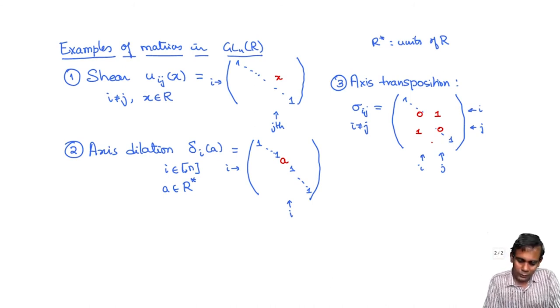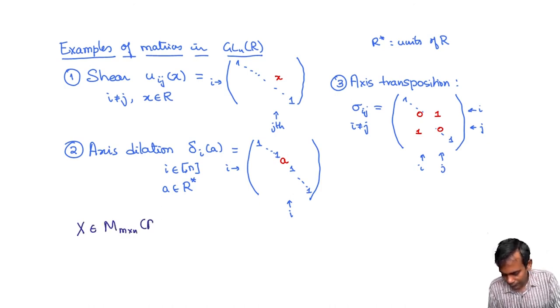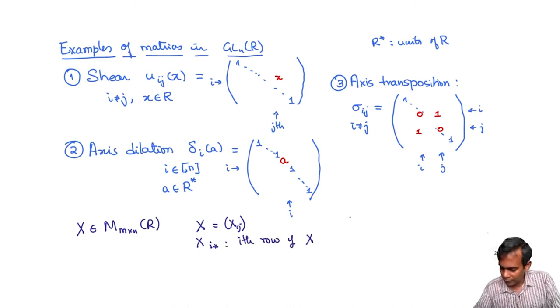And I will have some more notation that I want to introduce. And that is if x is a matrix in m by n R then I am going to say that the ijth entry of x is x_ij, x_i* denotes the ith row of x and x_*j denotes the jth column of x. So this ith row of x will be thought of as a row vector and the jth column of x will be thought of as a column vector. Now I want to think of these very special matrices in GL_n(R) as certain operations on matrices x in M_n(R). So these I will try to think of these in terms of row and column operations.